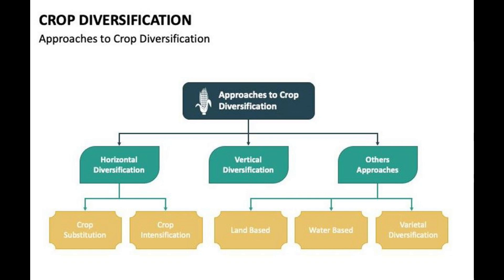This image shows the approaches to crop diversification. Crop diversification approaches are classified into three types: horizontal diversification, vertical diversification, and other approaches. Horizontal diversification is classified into crop substitution and crop intensification. Other approaches are classified into land-based, water-based, and varietal diversification.